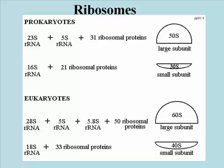Prokaryotic ribosomes are smaller than those of eukaryotes. The difference in size is in part due to larger ribosomal RNAs and more ribosomal proteins in the eukaryotic subunits. As you can see from this slide, we measure the sizes of the ribosomal RNAs and of the subunits themselves in what are called S-units, named after Svedborg.